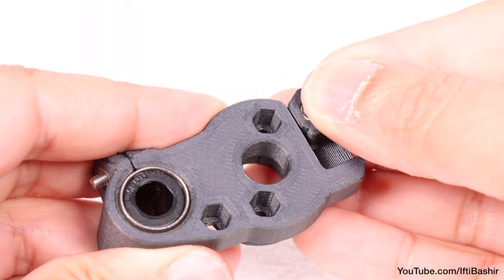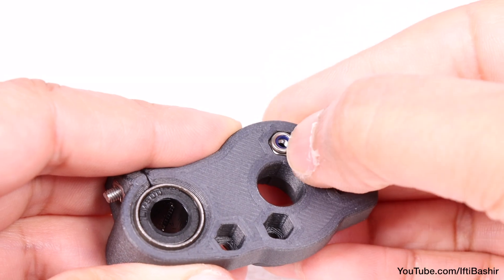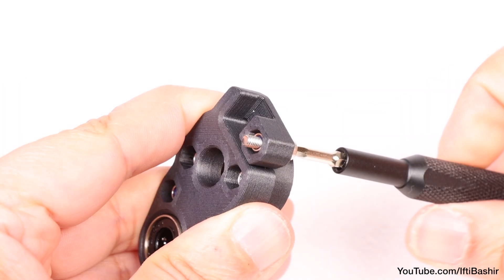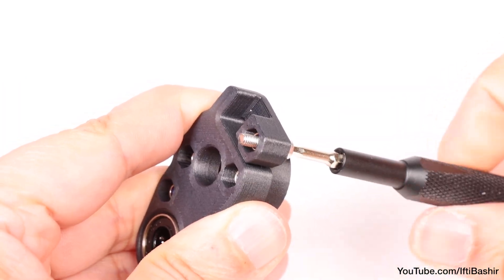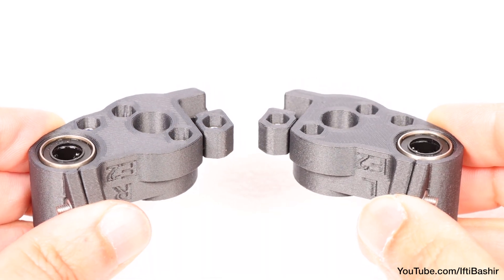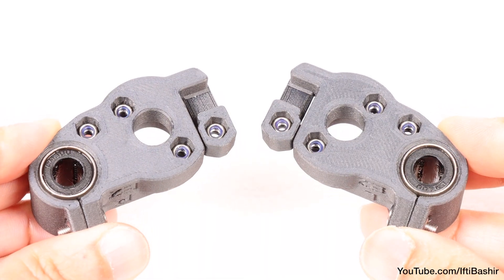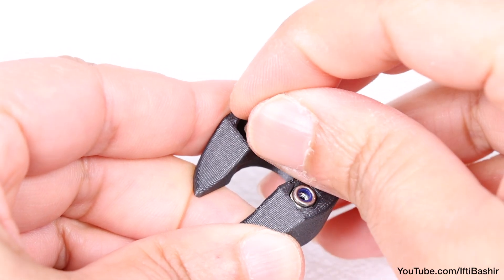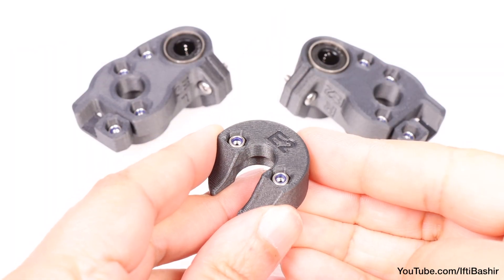With that done, insert four M3 lock nuts into the four available locations on the flatter side of the mount, using the screw pulling technique to pull all nuts right into the mount, and repeat on the second mount too, as well as a further two M3 lock nuts into the bed spacer. With that we have our bed mounts fully prepared.